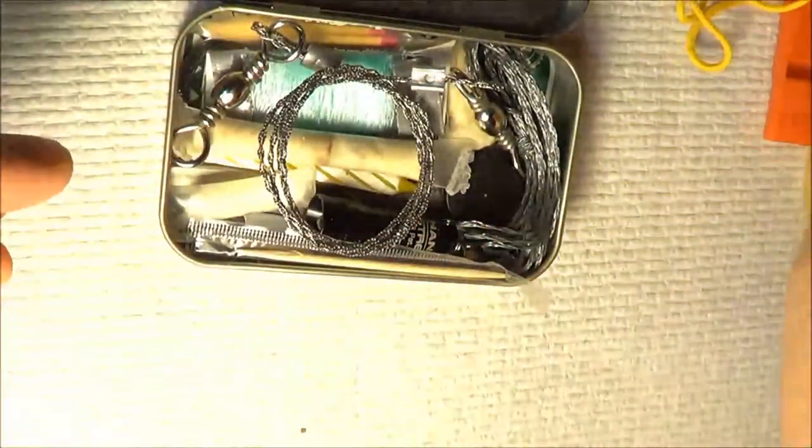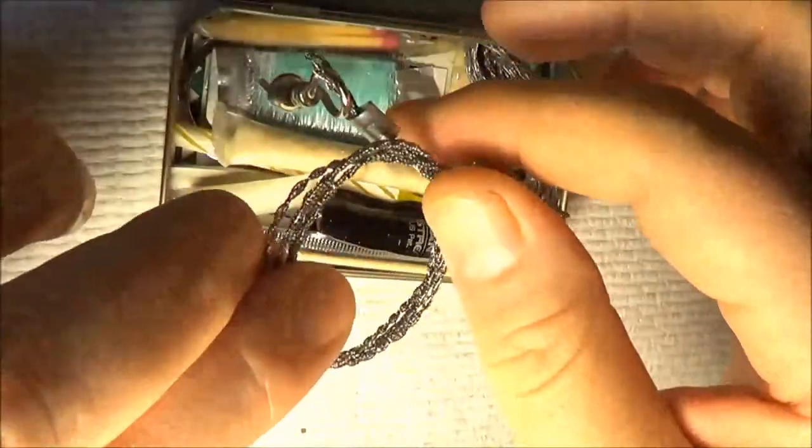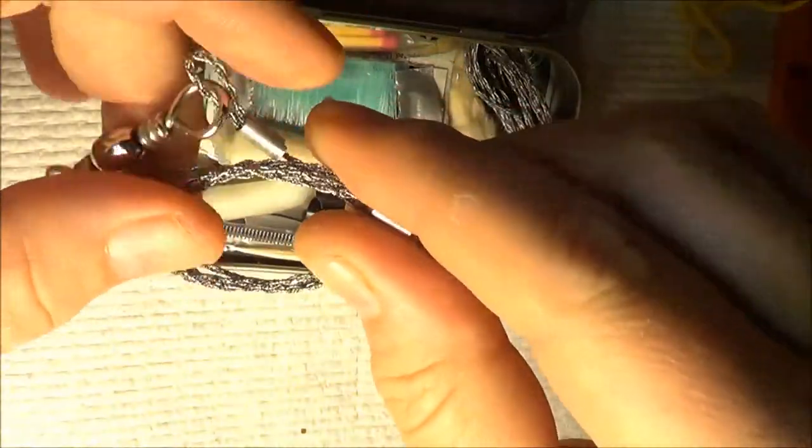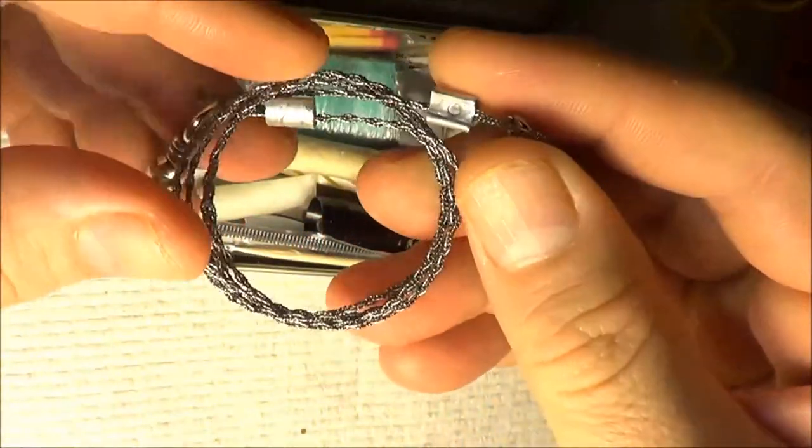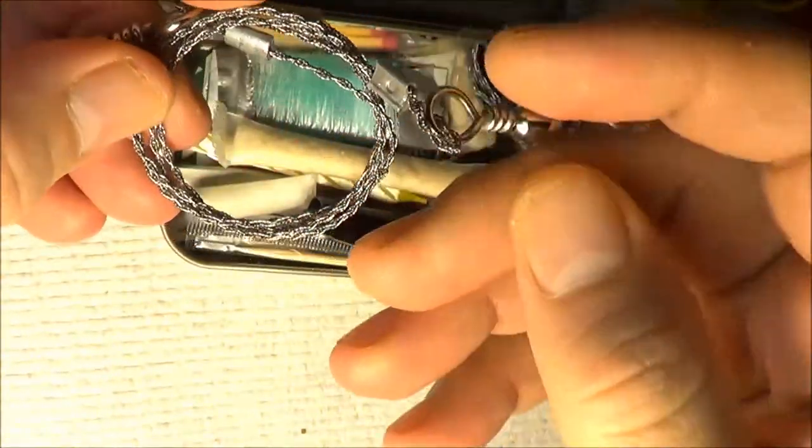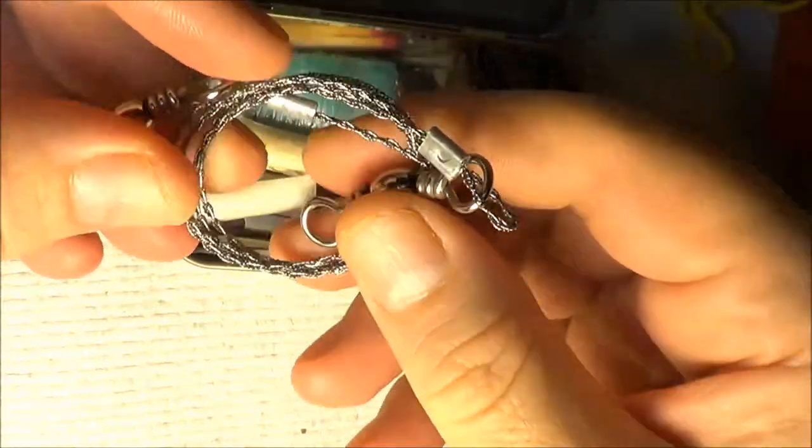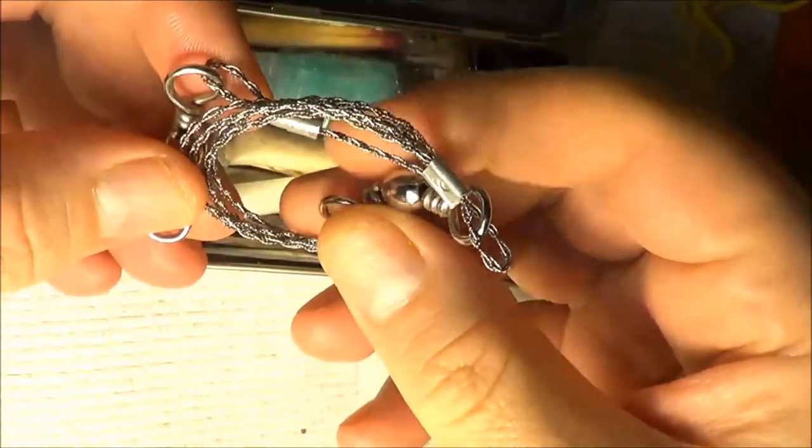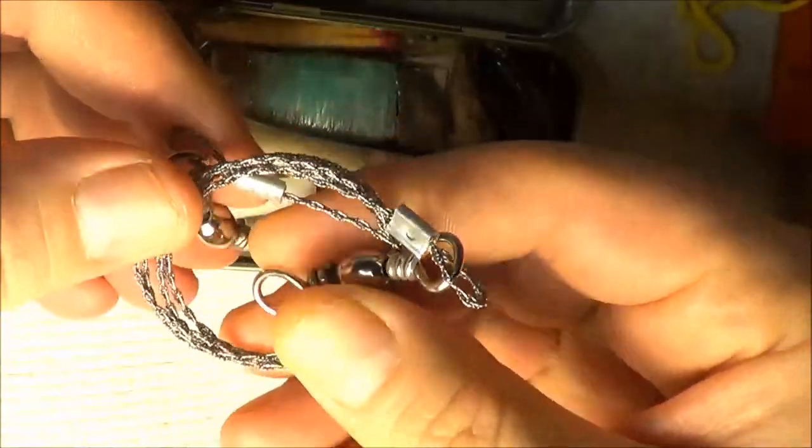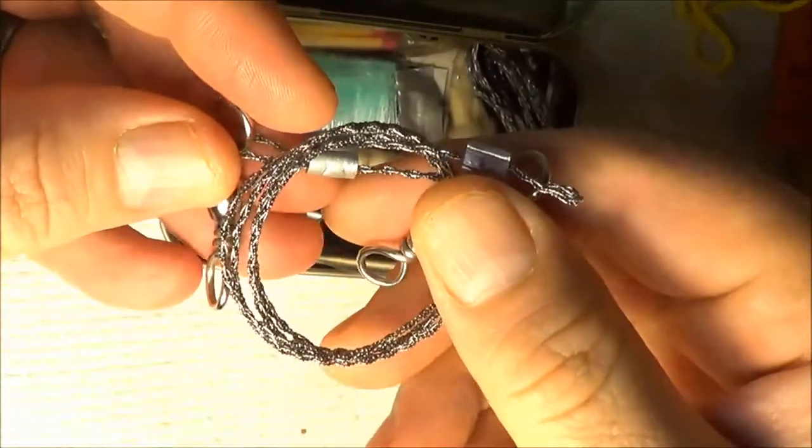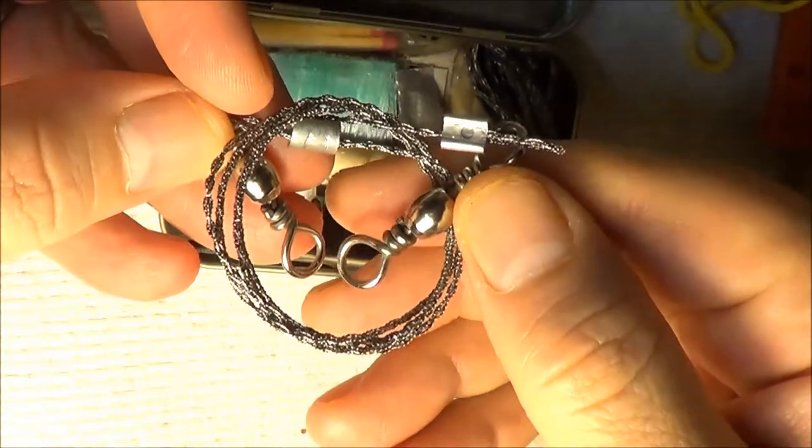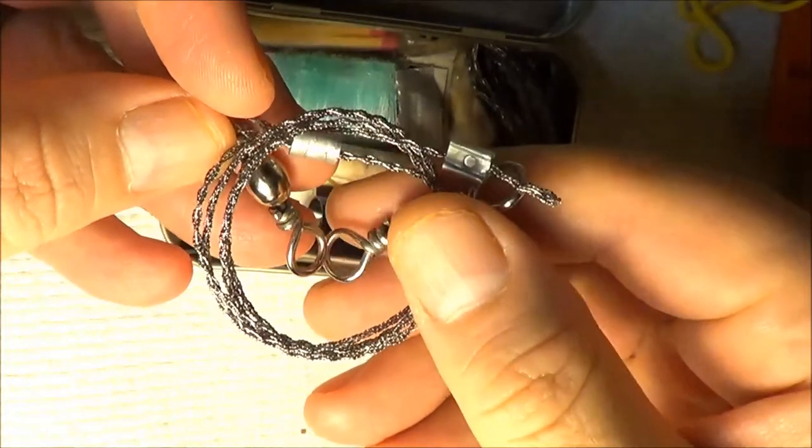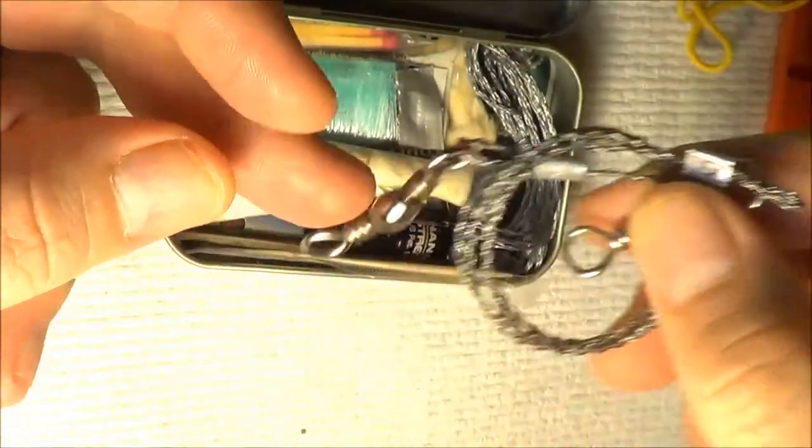And then I have in here one of the wire saws, survival saws, and it has two large rings that attach to these swivels which are in the bottom of my tin here, which you'll see. It's just hard to have this in here all together, but it's in the bottom of my tin and I'll show you that.